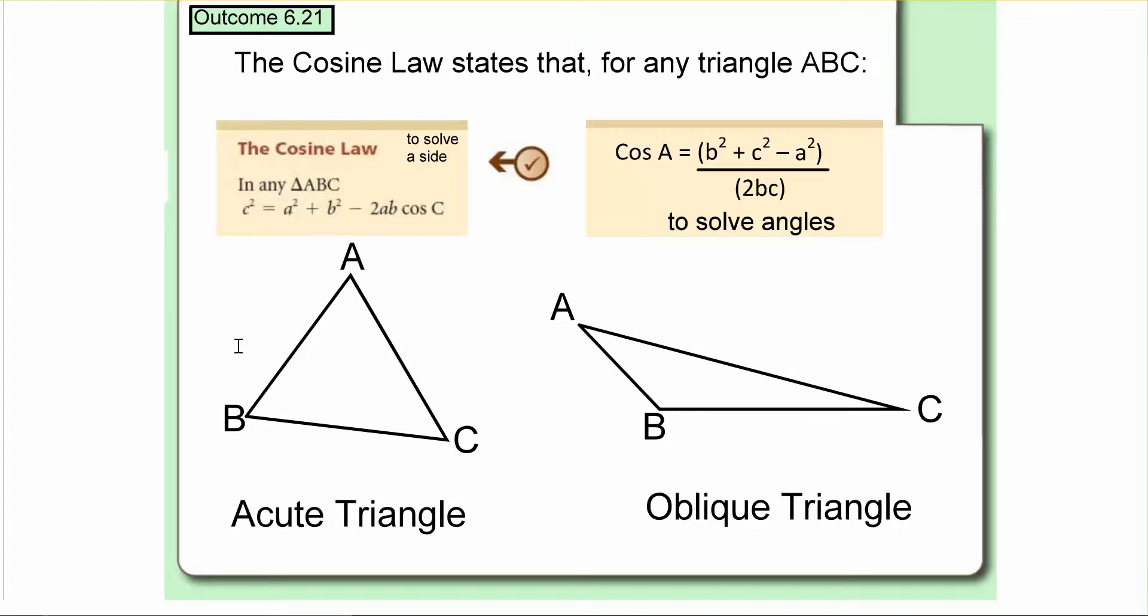Okay, hey guys. So we're moving on now to the cosine law. It's going to be kind of similar to the sine law, where it's still going to be with non-right triangles. We've got A, B, and C, like in this acute triangle on this side.